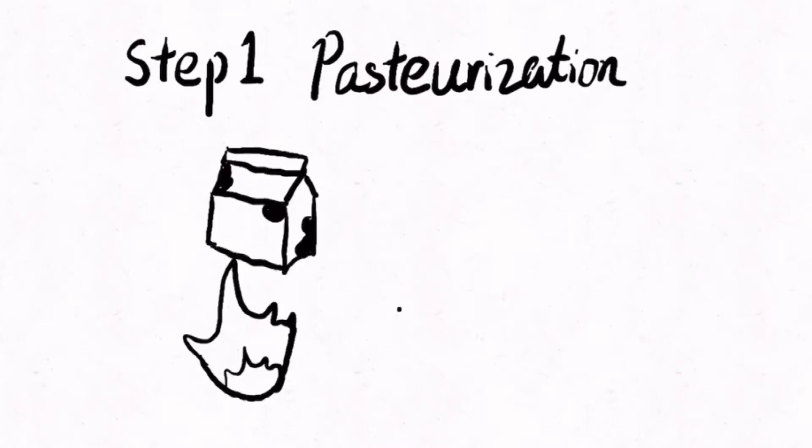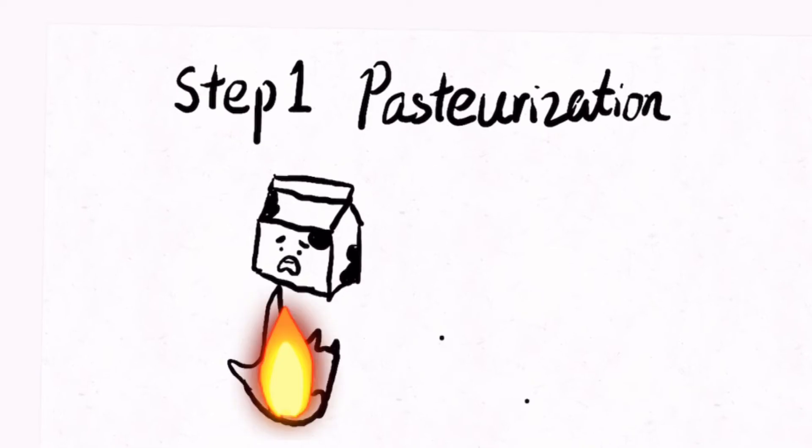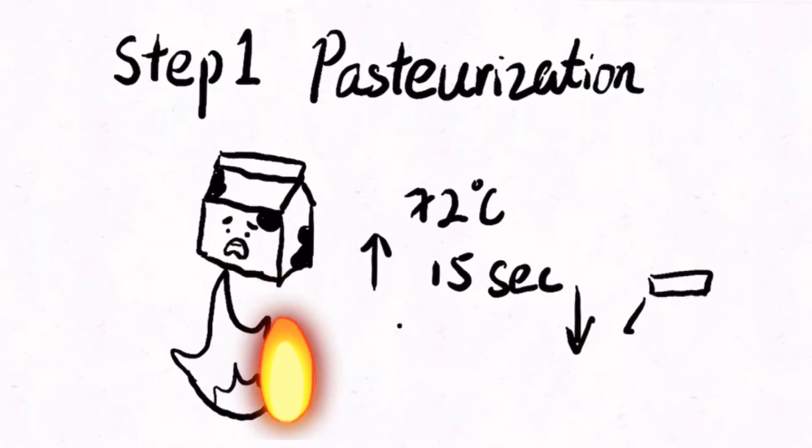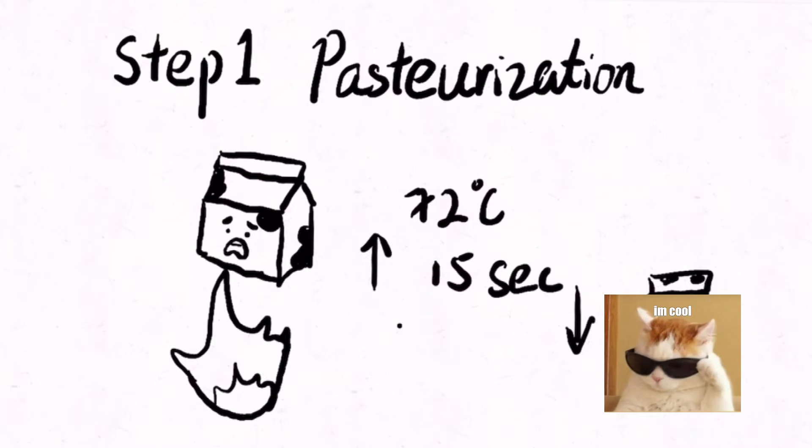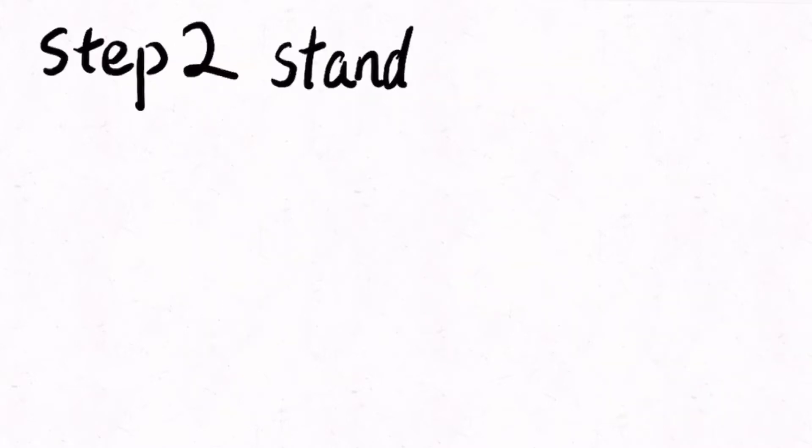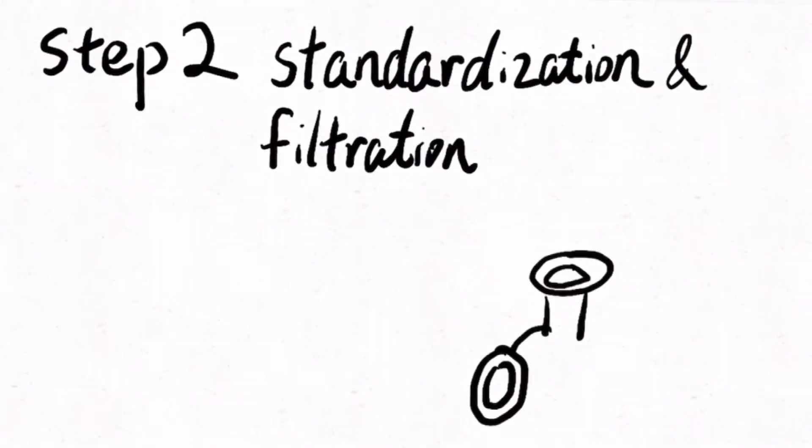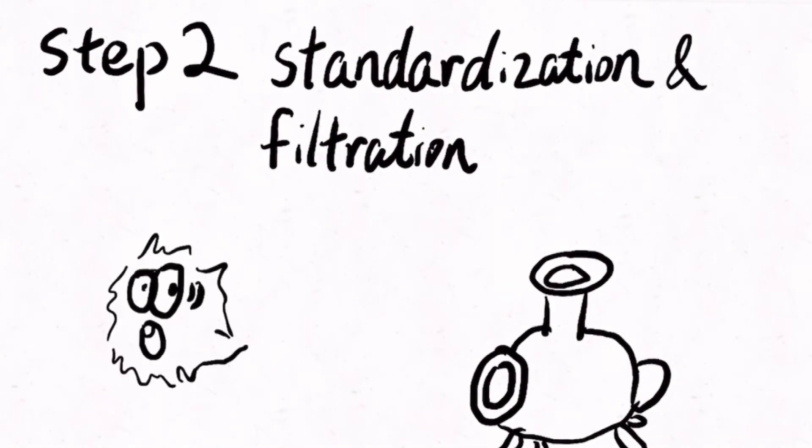Firstly, the milk is heated up to 72 degrees Celsius, held for at least 15 seconds, and cooled back down to original temperature for pasteurization. Then the milk goes through standardization and filtration in order to ensure that the milk is homogeneous and free of contaminating microorganisms.